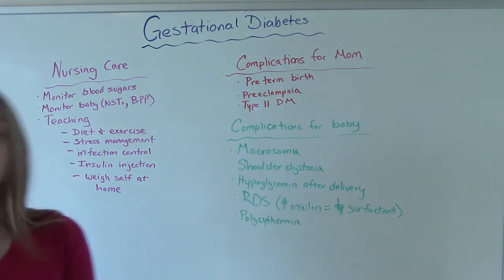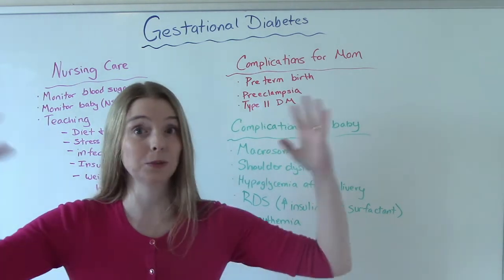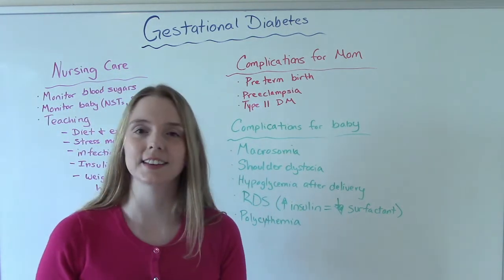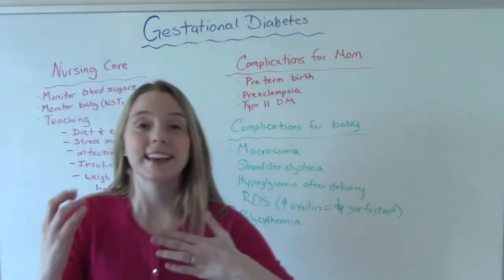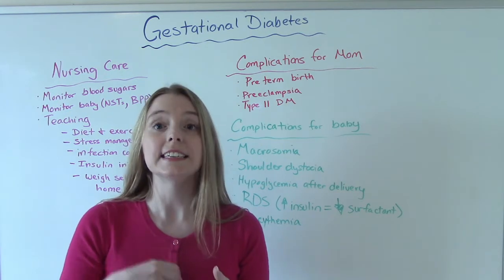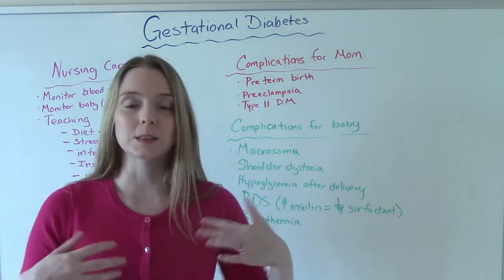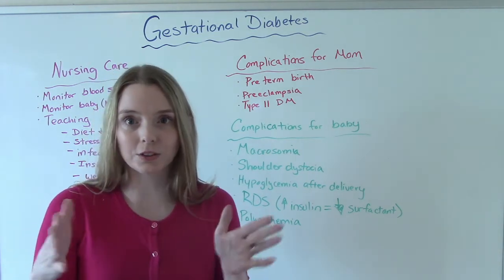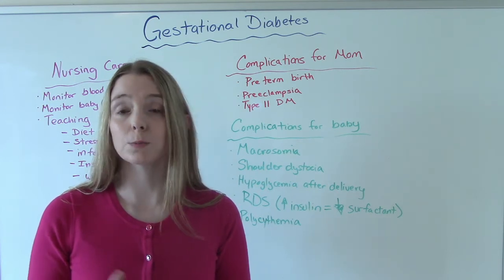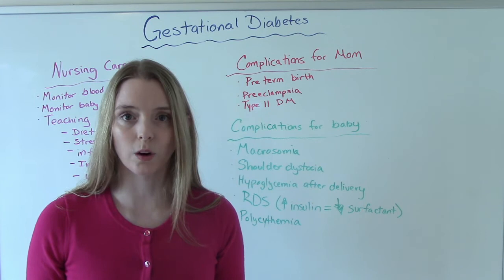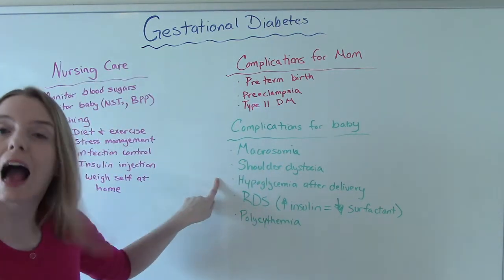Hypoglycemia after delivery is something we screen for aggressively in these infants. If mom had type one, type two, or gestational diabetes, if the baby is really big — our macrosomia babies — or really tiny, we are going to be doing blood sugars on this baby until we know they're at a stable level. Why? Because mom's insulin did not cross the placenta. The fetus was making their own insulin in response to mom's high levels of glucose. So this baby has been making high levels of insulin its whole gestation. Now it's born, it's still making those, but it's not getting the high glucose it was getting before. It's breastfeeding or bottle feeding and not eating as much, but it's still making that high level of insulin. So the baby needs to learn how to adjust, and sometimes hypoglycemia can result.